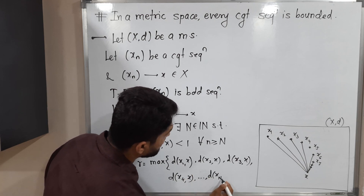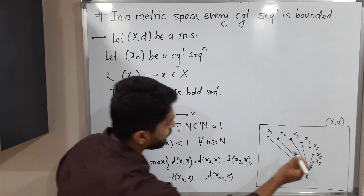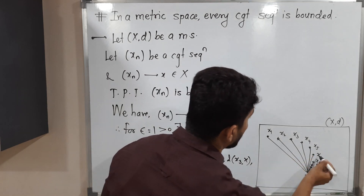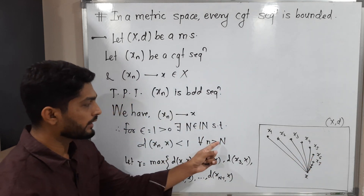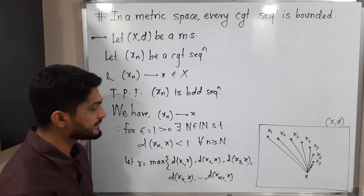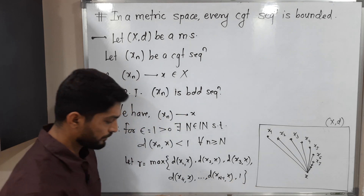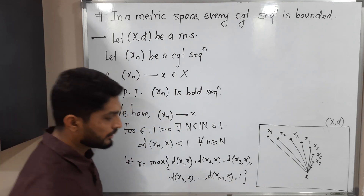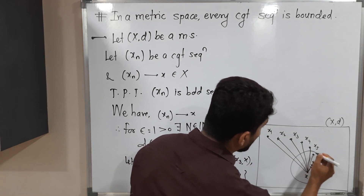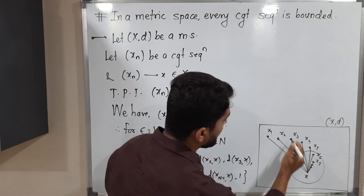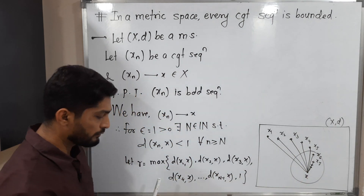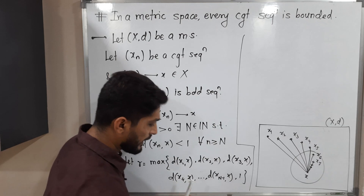Continuing up to d(x_{N-1}, x) — for this example d(x5, x) — and for all remaining terms like x6 and beyond, which have distance from x less than 1, I simply include 1 in the maximum. So R is the maximum of all these distances including 1, covering all terms of the sequence.